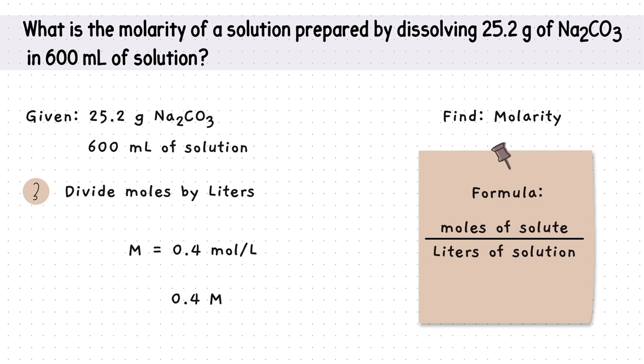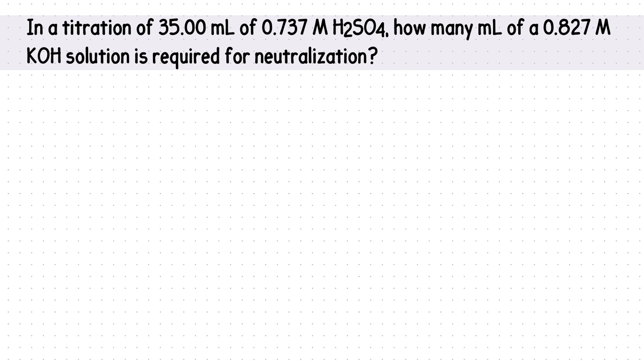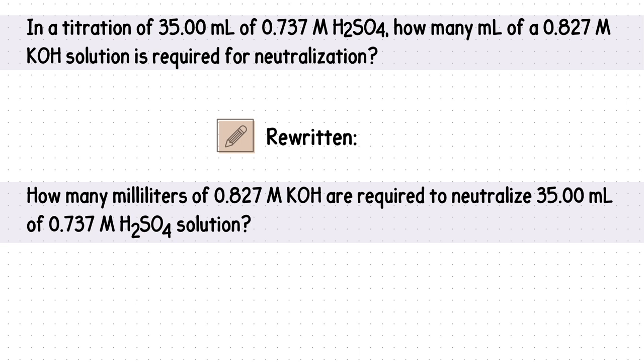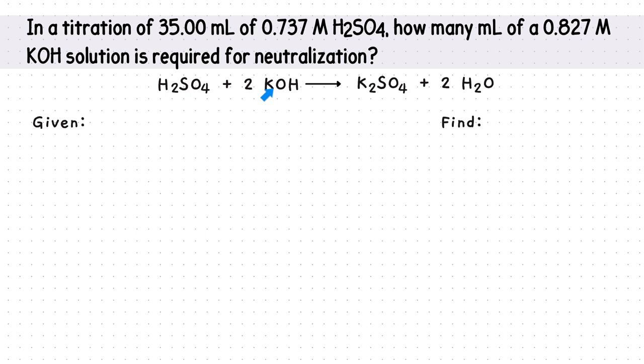Here's an example of a question you may see in the acid-base equilibria chapter. In a titration of 35.00 milliliters of 0.737 molar solution of sulfuric acid, how many milliliters of a 0.827 molar solution of potassium hydroxide is required for neutralization? Note, this same question can be rewritten to say, how many milliliters of 0.827 molar solution of potassium hydroxide are required to neutralize 35.00 milliliters of 0.737 molar solution of sulfuric acid. We would start with writing a balanced chemical equation, which was one of our chemistry foundations.